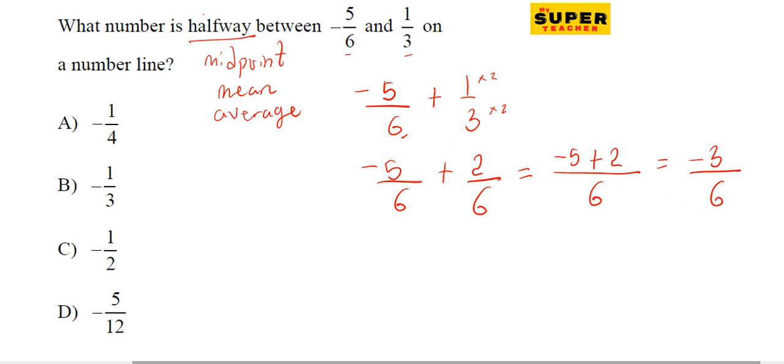Then we have to divide by 2. So minus 3 over 6 divided by 2, which is minus 3 over 6 times 1 over 2. When you change division to multiplication, you flip it over, so 1 comes up and 2 goes down.